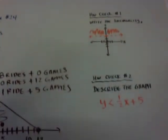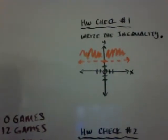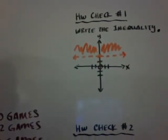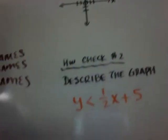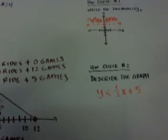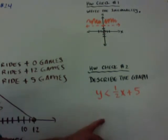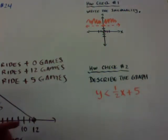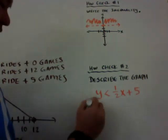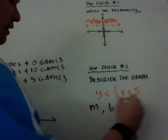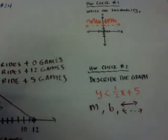Your two homework checks: Number 1 is to write the inequality for a given graph. Number 2 is to describe a graph — I want you to tell me four things: the slope, the y-intercept, whether it's a solid or dashed line, and whether you shade above or below the line.